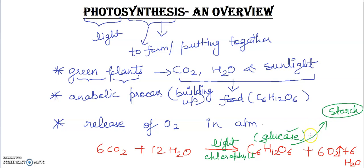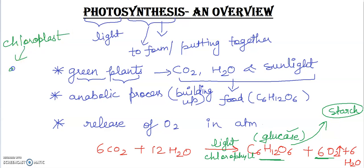Oxygen is released as a by-product, and glucose is the main product. The by-products formed by photosynthesis are oxygen and water. Chlorophyll is a pigment found in the chloroplast. Chloroplasts are cell organelles found in plant cells containing the green pigment chlorophyll, which is able to trap light energy. Photosynthesis requires CO2, water, light, and chlorophyll pigment.